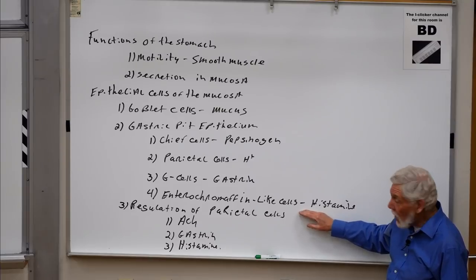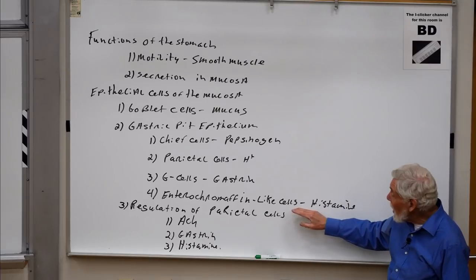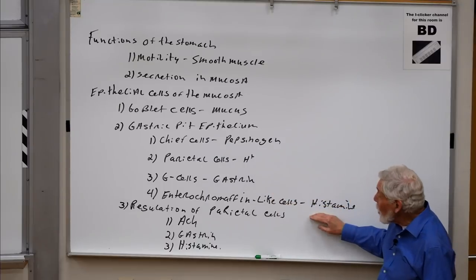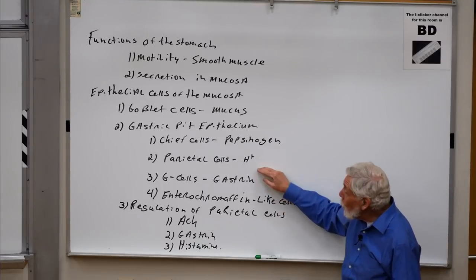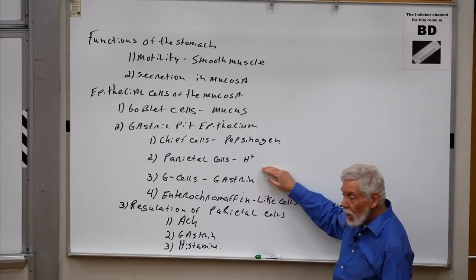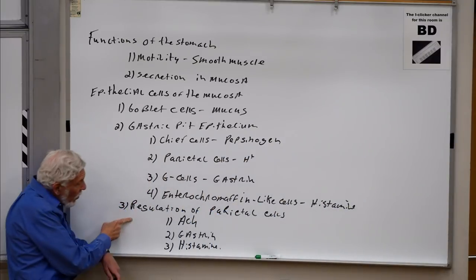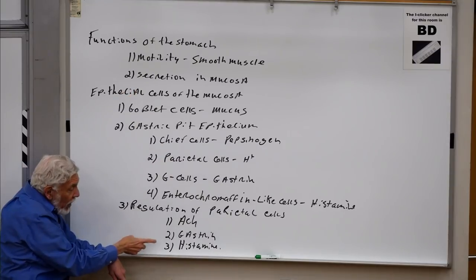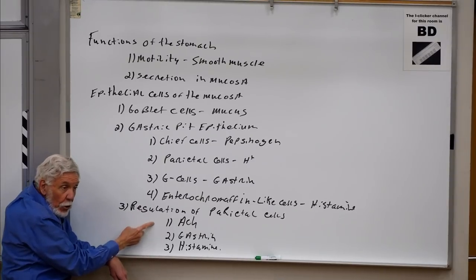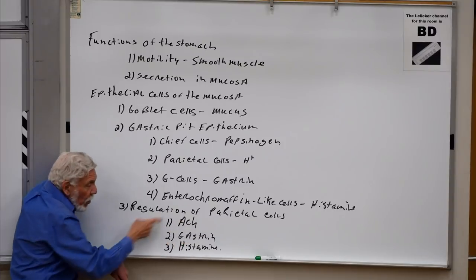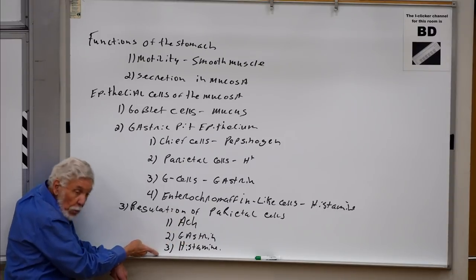The enterochromaffin-like cells — sometimes known as ECL cells — are located not far from the parietal cells. The histamine released on the basolateral side can diffuse through the extracellular space and bind to G protein-coupled receptors on the parietal cells. So the major regulating molecules for parietal cells and their release of hydrogen ion are gastrin, histamine, and acetylcholine from the parasympathetic branch of the autonomic nervous system — in all three cases, through G protein-coupled receptors.